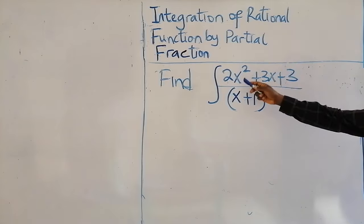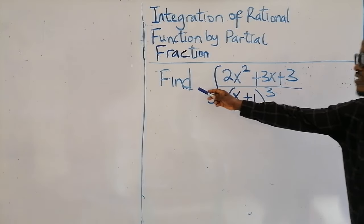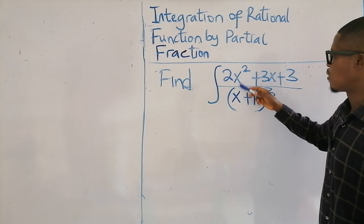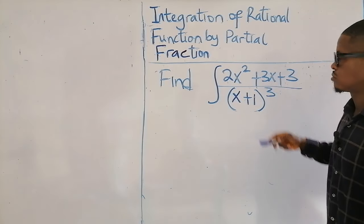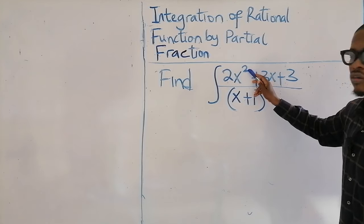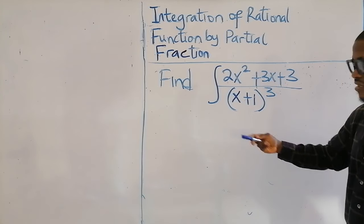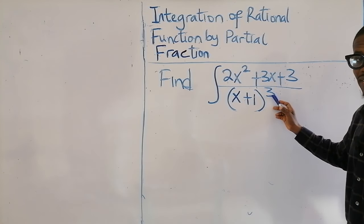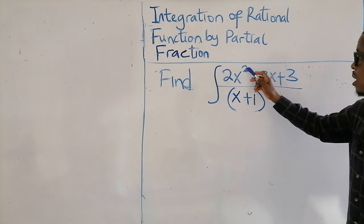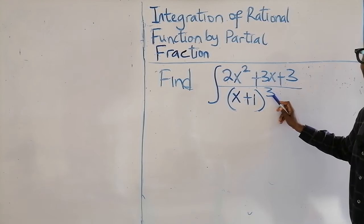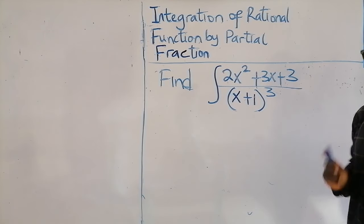We have this question: find the integral of this rational function whereby the degree of the numerator is equal to that of the denominator. The power of the numerator is 3, and the power of the denominator is 3.